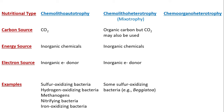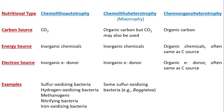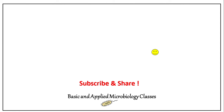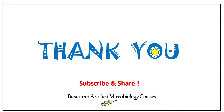Very few bacteria can follow mixotrophy, and Beggiatoa is one of them. The fifth category is chemo-organo-heterotrophs. Carbon source is organic carbon; energy source is organic chemicals; and electron source is organic electron donors, often the same as the carbon source. Examples include most well-known heterotrophic bacteria, almost all pathogenic bacteria, fungi, protists, and many archaea. Thank you so much, keep watching and stay connected.